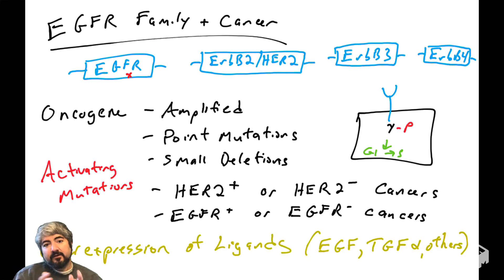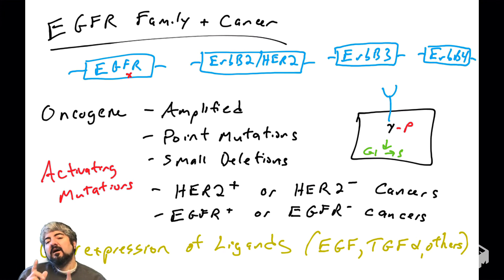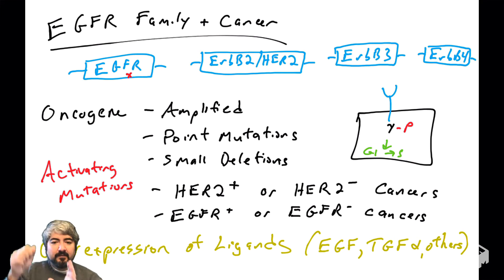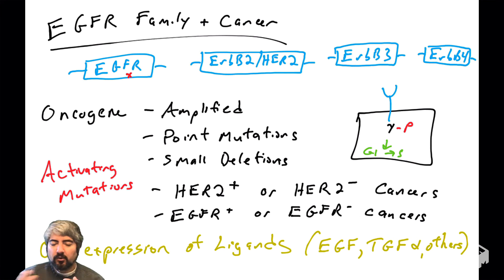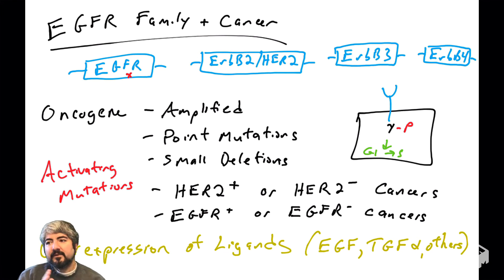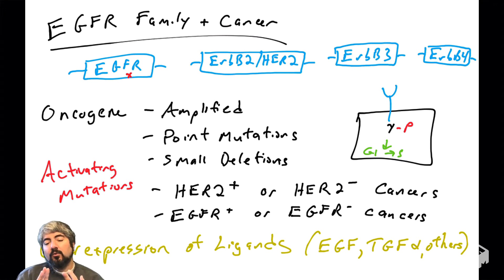It's also possible that there are no mutations in EGFR family members, but these receptors are still driving the cell through the cell cycle because of changes in the ligands for these receptors. EGFR family members bind EGF — epidermal growth factor — or similar proteins like TGF-alpha and others, which can bind the ligand binding domain and cause dimerization and transactivation. Some human cancers are driven by overexpression of these ligands, meaning too many growth factors are present. Those are two common ways the EGFR pathway is activated: too many ligands or mutant receptors.